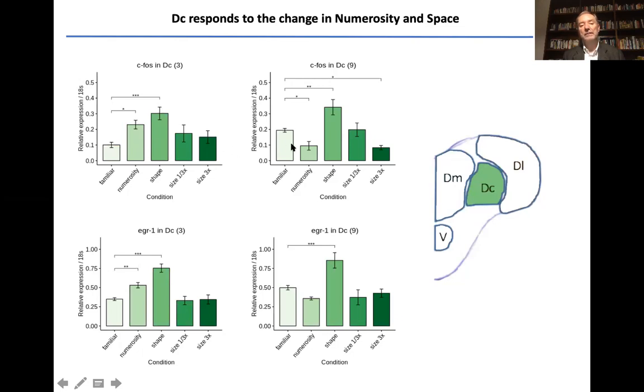And vice versa, with respect to the control group, those trained with nine then presented with three show a decrease. There was also activity in response to the shape in this case without changing the direction.